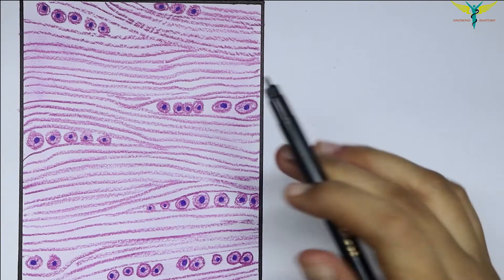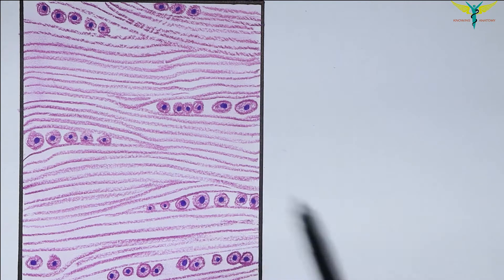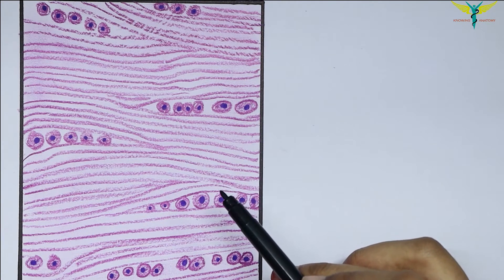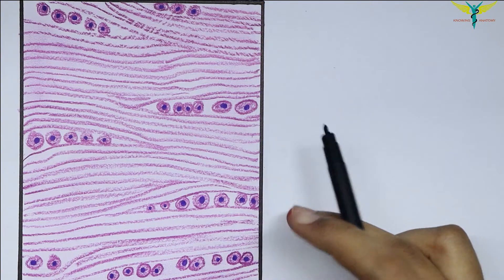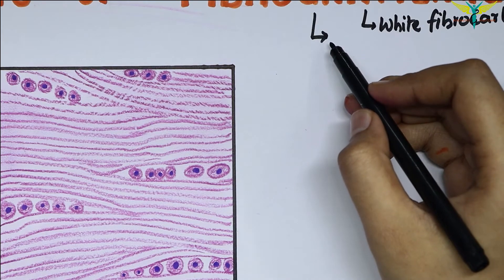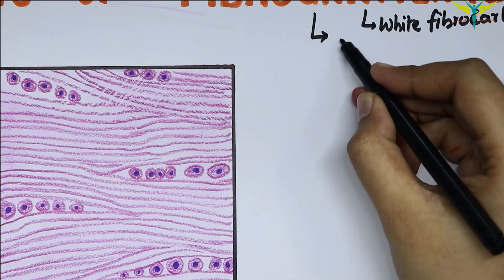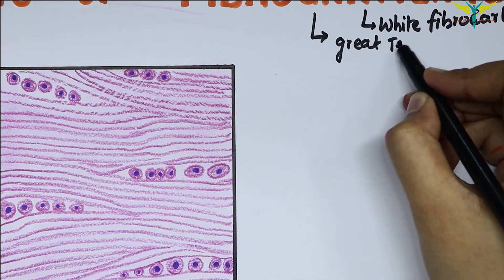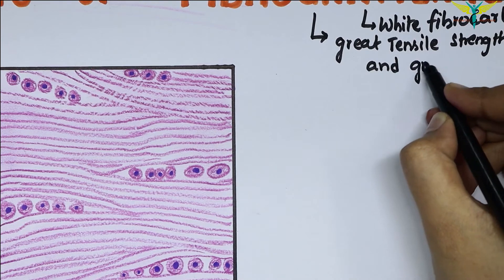There is no perichondrium over the fibrocartilage, and this type of cartilage without perichondrium has great tensile strength combined with greater elasticity.